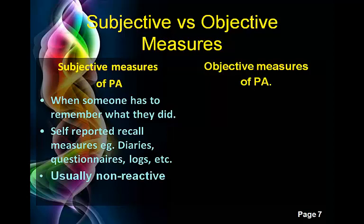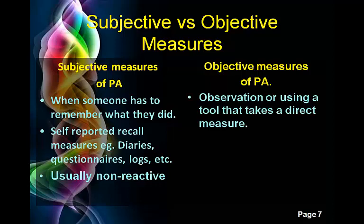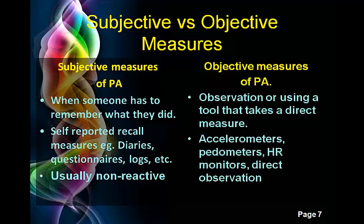A really good thing about subjective measures is that they're usually non-reactive. Reactivity means it causes a reaction in exercise behaviour. Having to fill out a log or diary about how much exercise you've done will probably not force you to increase your exercise regime. Objective measures, on the other hand, are usually quite reactive — they're an observation or a tool that takes a direct measure, such as an accelerometer, pedometer, heart rate monitor, or direct observation. The first three are tools the person actually wears, so when wearing them you're more likely to be aware of them and increase your activity levels.